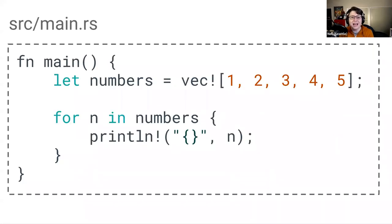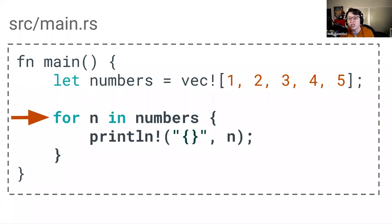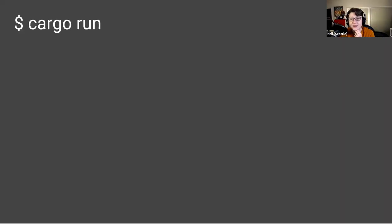Let's take a look at a simple code example in Rust. This Rust function declares a vector composed of the integers one, two, three, four, and five. After it declares this vector, it uses a for loop to iterate through each integer in the vector and print it out on a new line. If we were to run this code in our terminal using cargo run, as expected, we see the numbers one through five printed out on the screen.